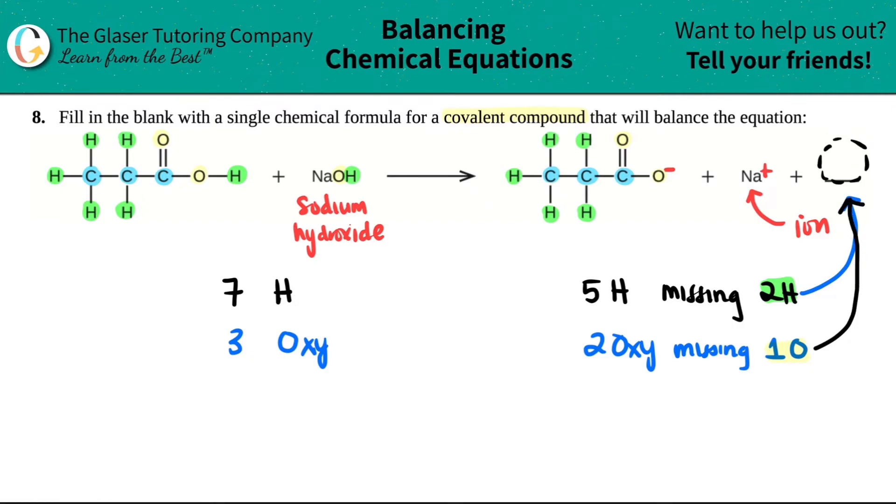That's missing. And now the last element is sodium. Let's just quickly run through that. We'll do that in blue. I have one sodium here. I have one sodium here. So that's balanced. So the only thing that's missing and that I need to put in my single chemical formula is a compound that has two hydrogens and one oxygen.